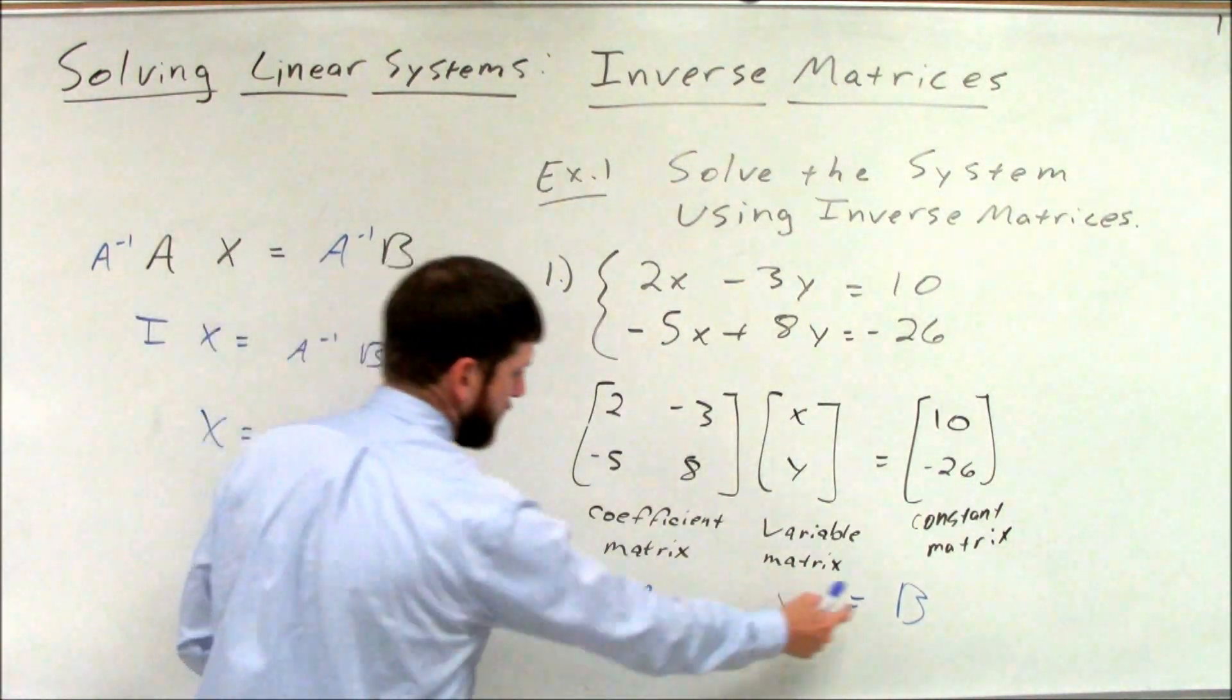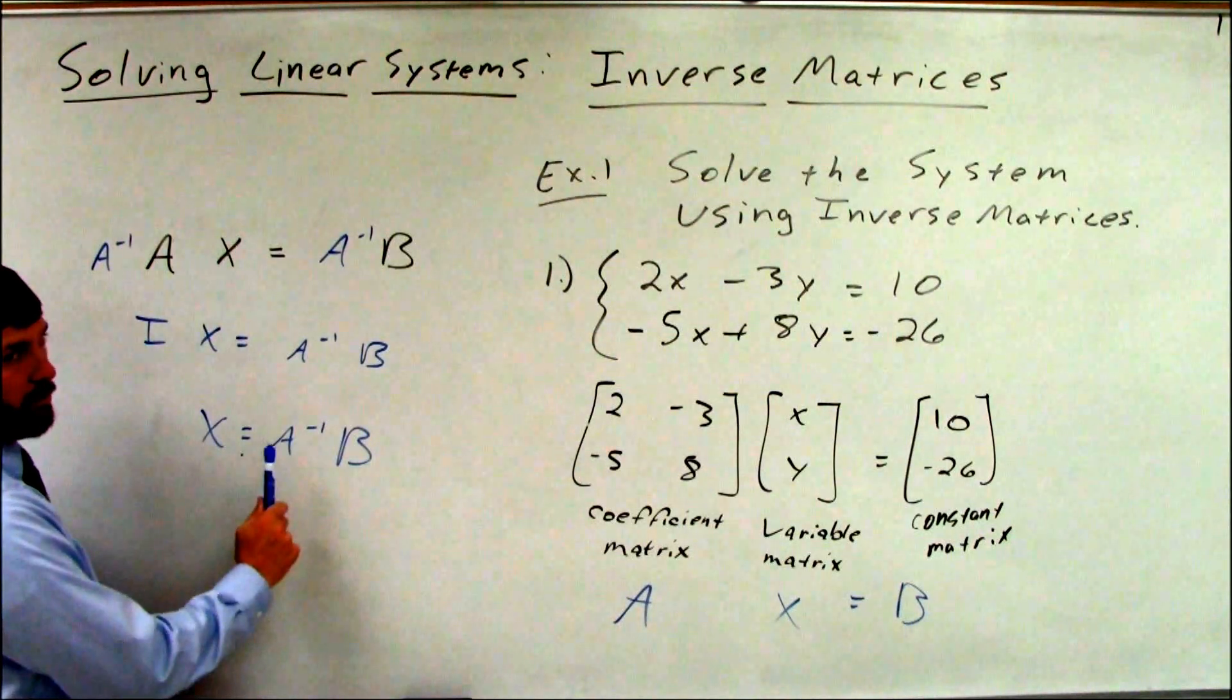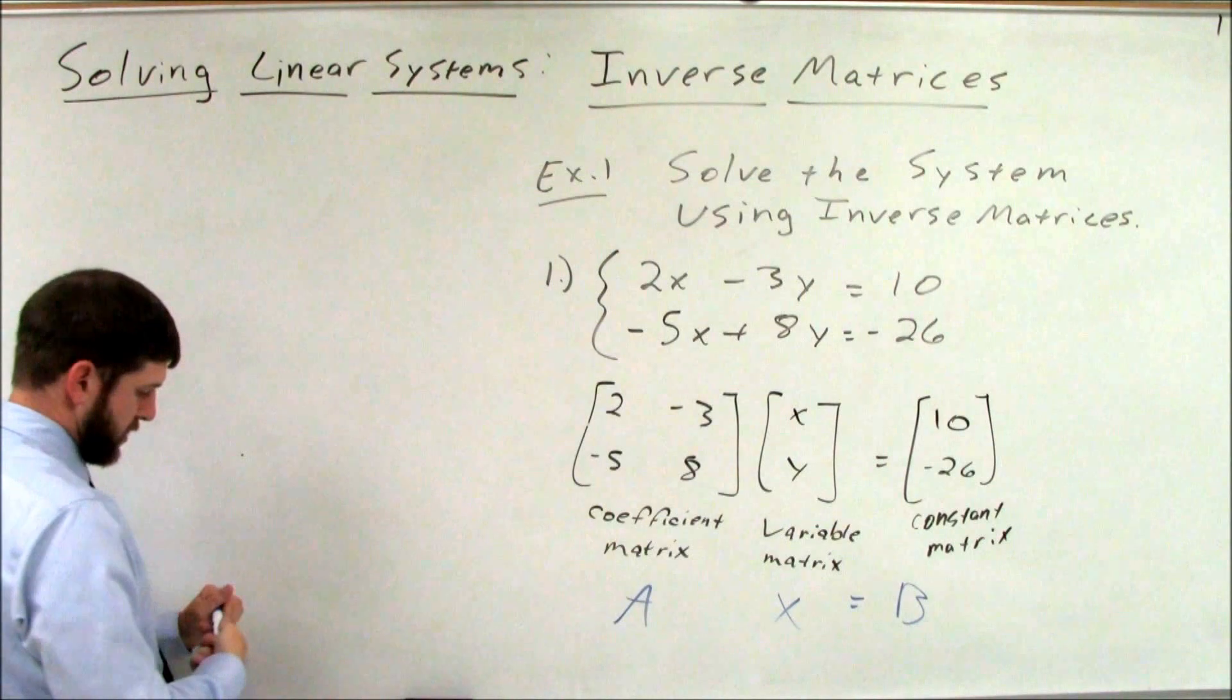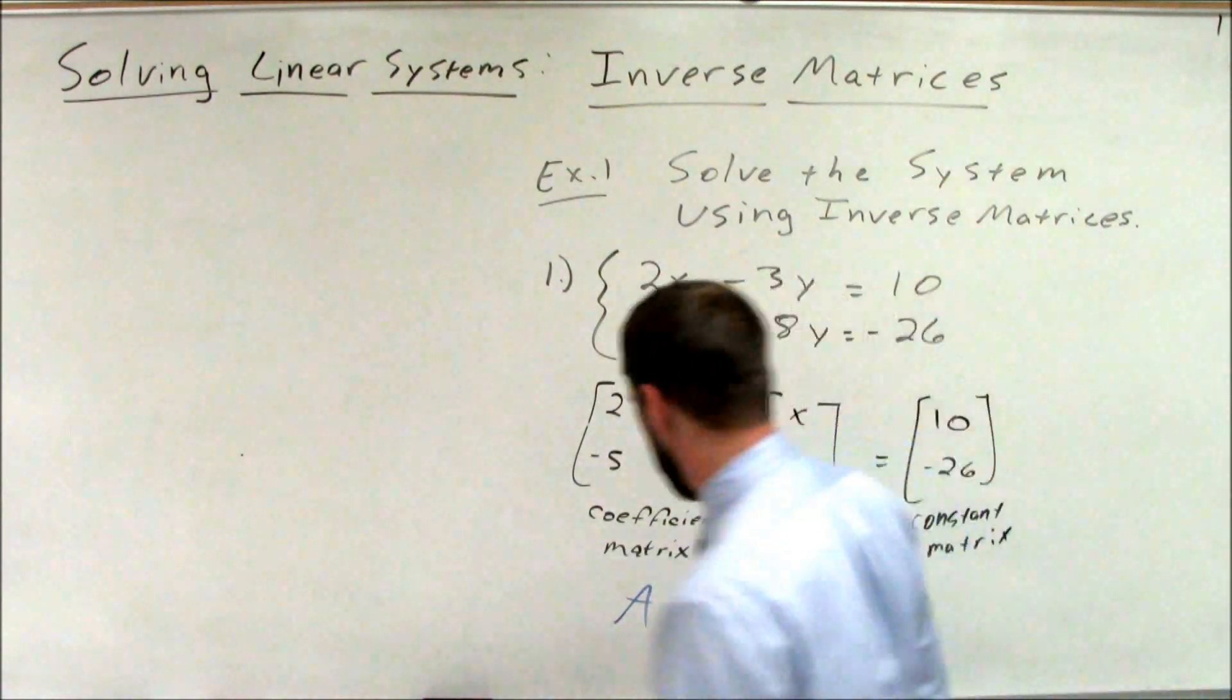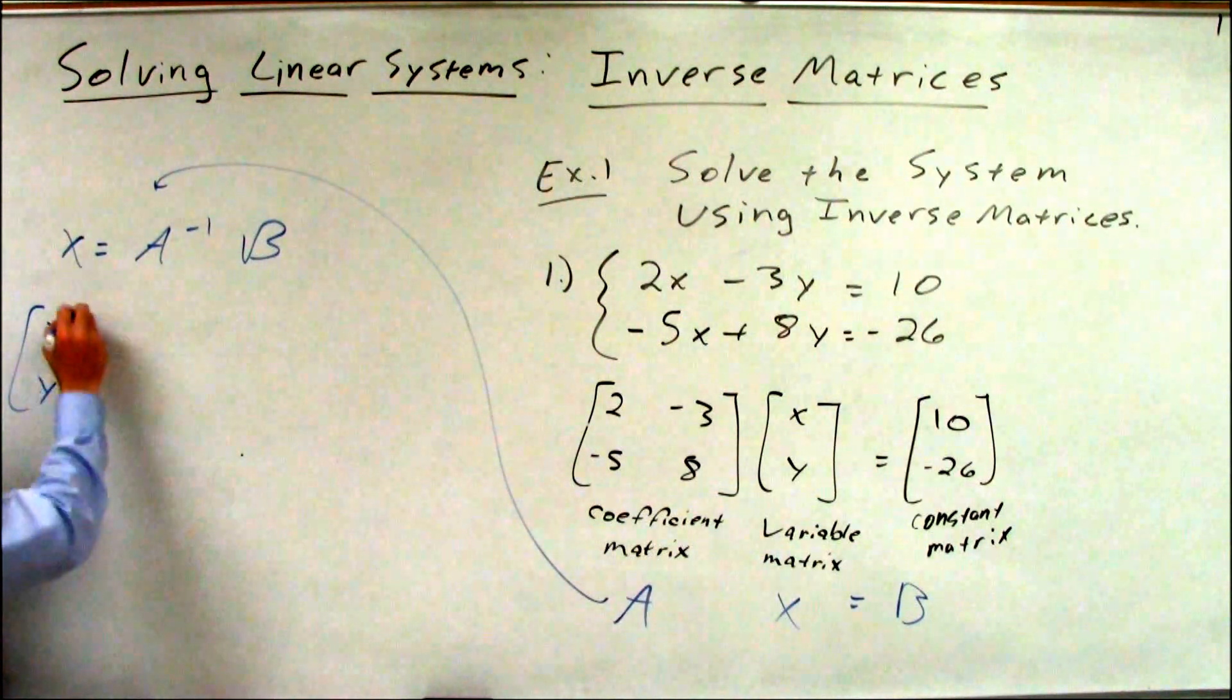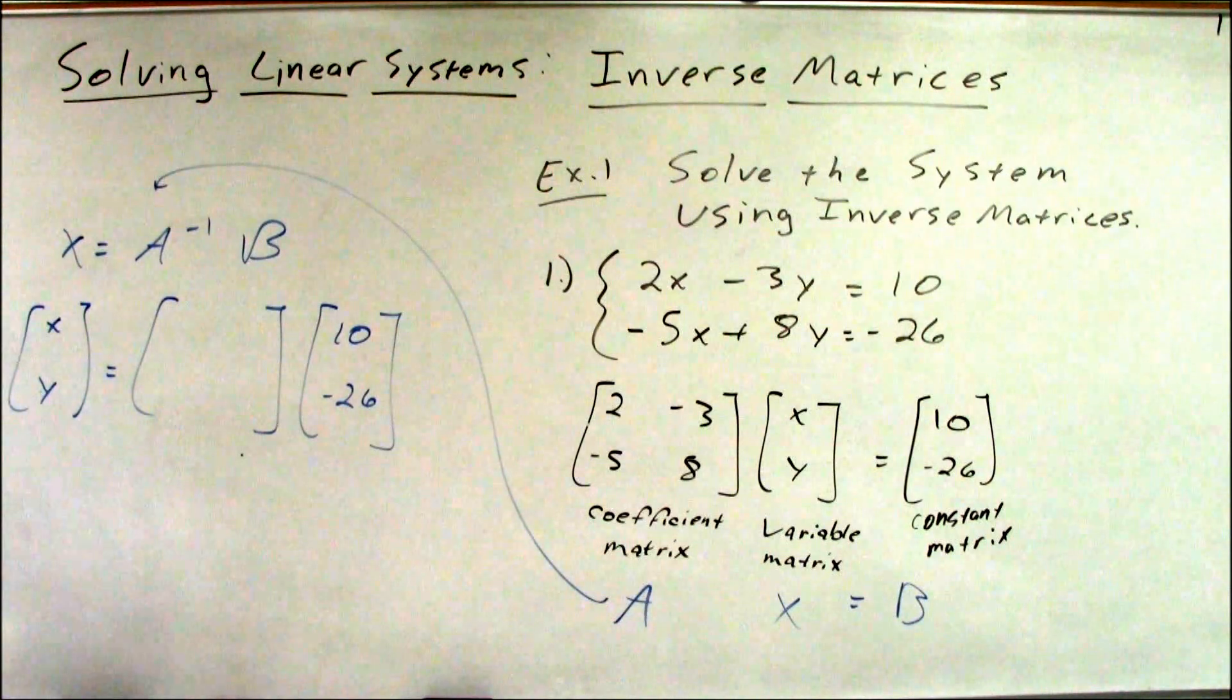Multiply both sides times the inverse of that matrix. So if I calculate the inverse of A, I know that my variables, my variable matrix should be equivalent to the inverse of my coefficient matrix times my constant matrix. Let's see it. So let's start, because we know we're going to here. We know we're trying to get to x equals A inverse times B. So my xy has got to equal A inverse times my B, which is my constant matrix, 10 and negative 26. We just need to figure out what A inverse is.